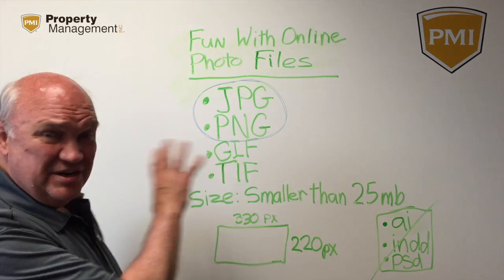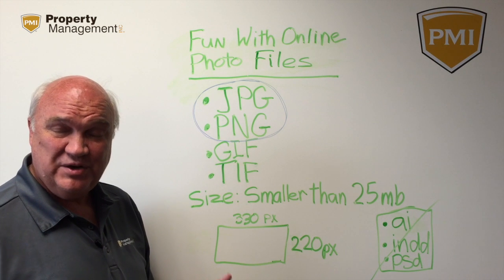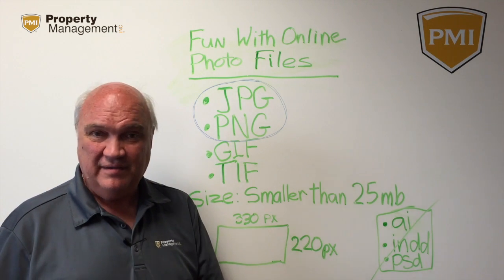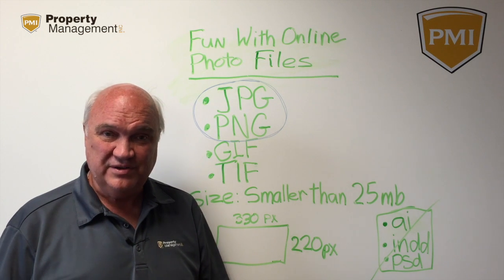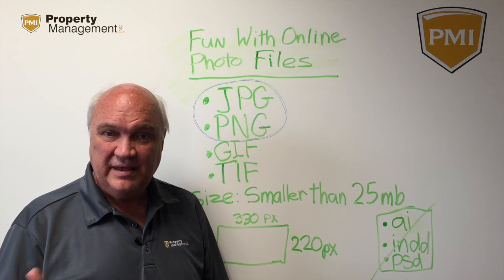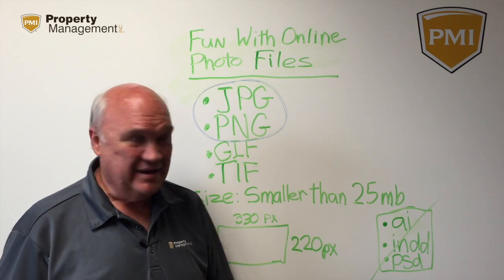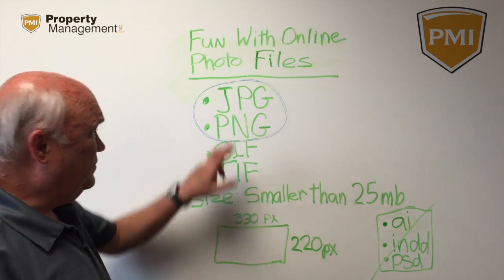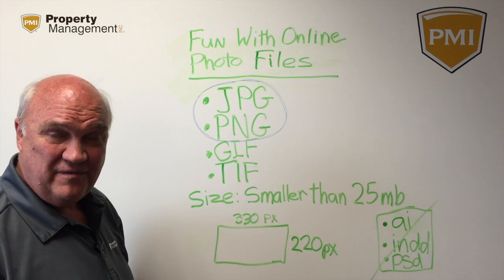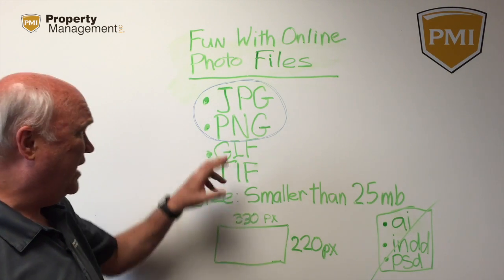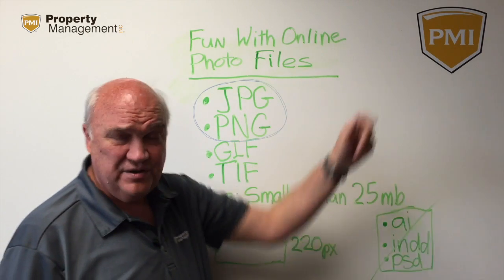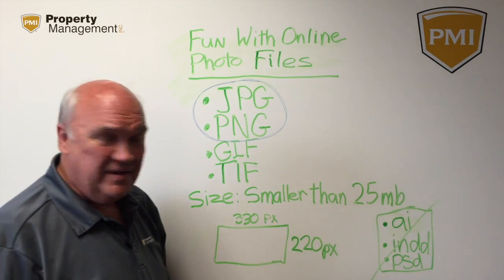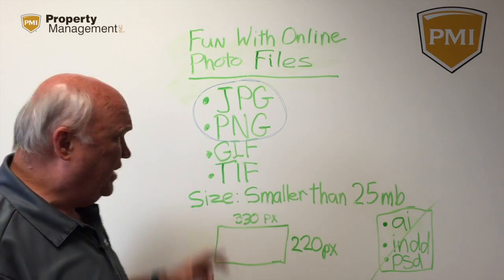Some of those things: we need to check the format and make sure we're using the right format. If you take a photo with a digital camera or an iPhone, it's going to come out in a certain format — either a JPEG or a PNG. Typically JPEG files are photo format. PNGs are usually used for logos and line art. So we want to make sure they're in the right format.